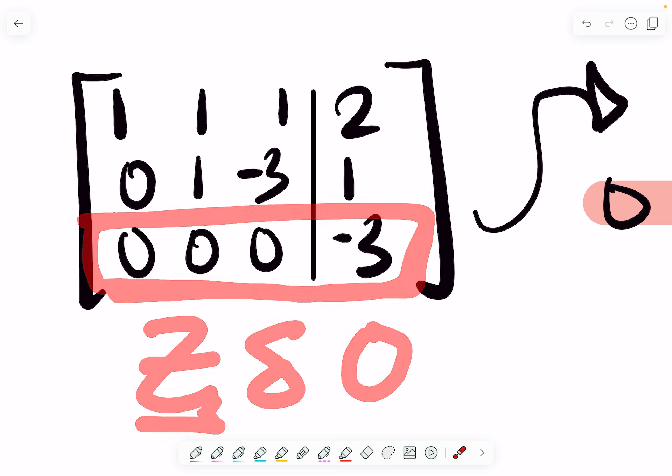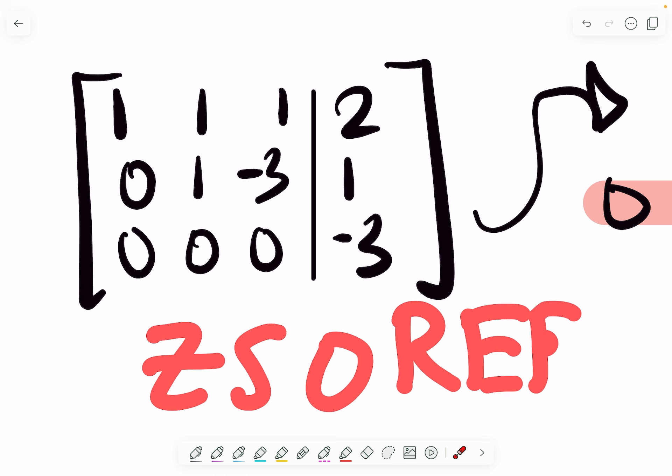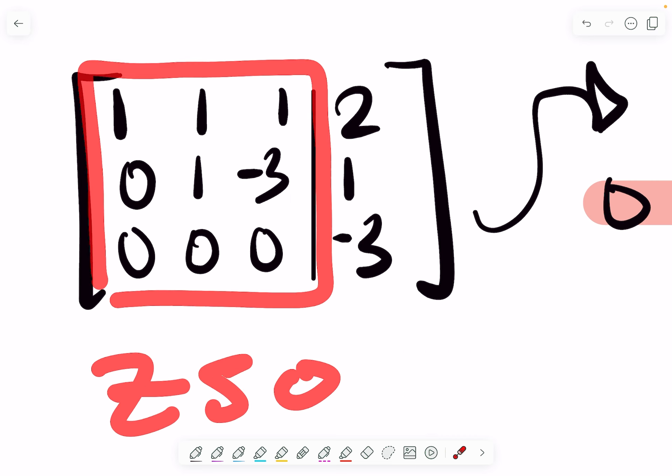Well, remember that row echelon form only applies to the coefficient matrix. So you only should be looking at this when checking the conditions for row echelon form. So yes, in coefficient matrix A, there is a zero row and it is at the bottom of the matrix.